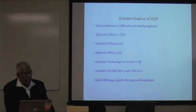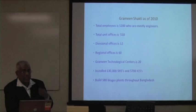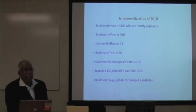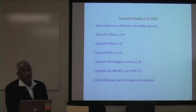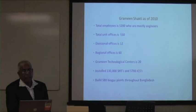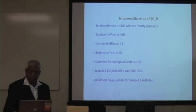Grameen Shakti now has 5,200 employees — mostly engineers, civil engineers, mechanical engineers, and people with masters in physics. They have 2,000 unit offices, 510 divisional offices, 12 regional offices, 16 Grameen Technology Centers, and 20 installed production systems. They have 57,000 eco-procuring stores in Bangladesh and field 580 biogas plants across Bangladesh.